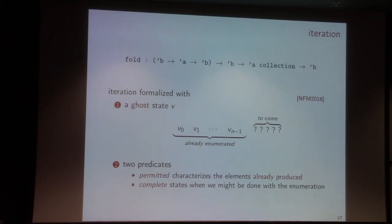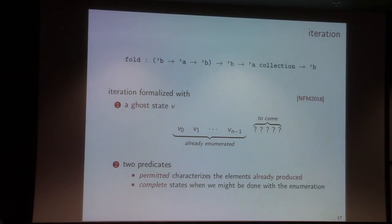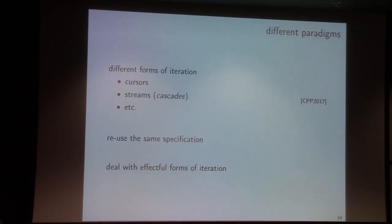On top of this visited sequence, I write two logical predicates: "permitted," which characterizes all possible sub-sequences that can be seen during iteration; and "complete," which states when I'm done with the iteration — no more elements to enumerate. And it's as simple as that — this is our proposal to specify iteration. In particular, we can use it to specify other forms of iteration, such as cursors, streams, and in our context what we call cascades.